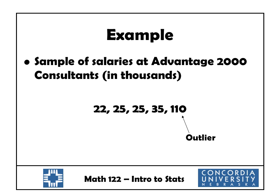To illustrate some ideas of a basic descriptive statistic, let's start with a simple set of data: a sample of salaries at Advantage 2000 Consultants in thousands. We have one person making $22,000, two making $25,000, one making $35,000, and one making $110,000. The first four numbers are relatively close to each other, but that last one is quite a bit larger — we call it an outlier because it lies outside the range of the other numbers.